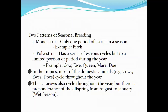There are two patterns of seasonal breeding. Monoestrus animals have only one period of heat in a season — examples are female dogs, the bitch. Polyestrus animals have a series of estrus cycles but limited to a portion of the year, which includes cows, ewes, mares, does, and the queen, which is the female cat. In the tropics, most domestic animals like cows, ewes, and does cycle throughout the year because there is no clear distinction in day length since we live near the equator.